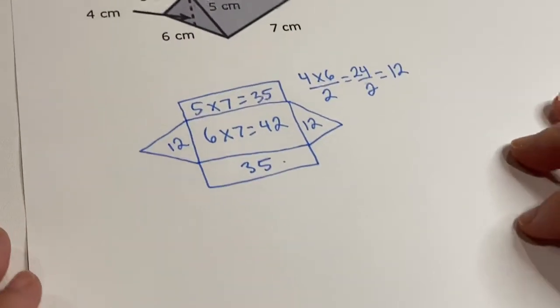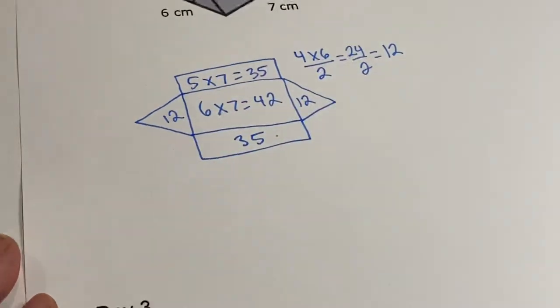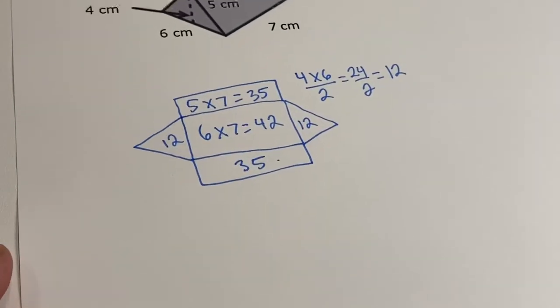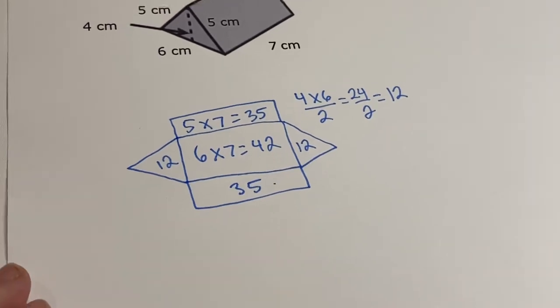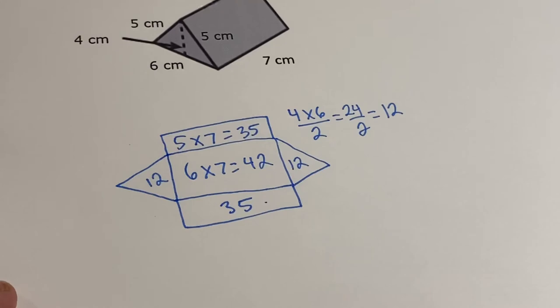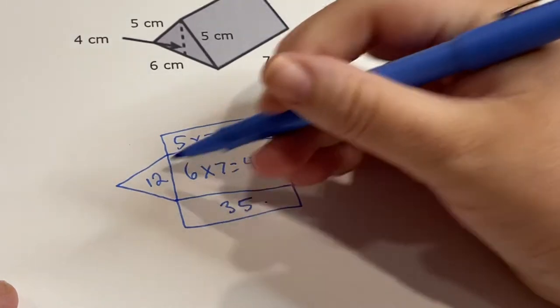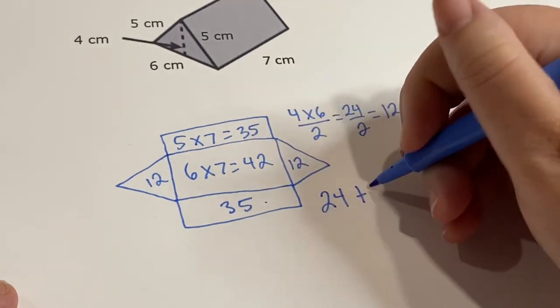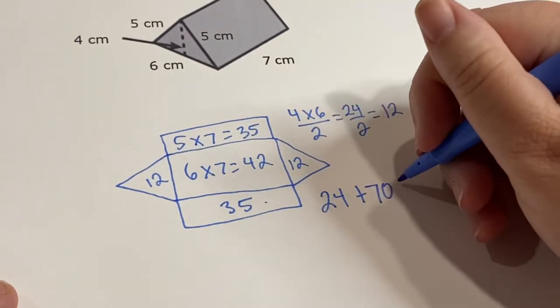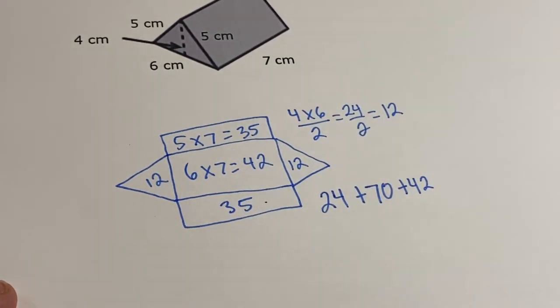So we have our five areas here, and then we just add them together. Now, you can just take out a calculator and add them together, if your teacher lets you do that. Personally, this is how I would do it to just cut down on steps when I'm writing it out. In my head, I know that 12 plus 12 is 24, and then 35 plus 35 is 70, and then plus 42. That's a little bit easier of a problem to do than having five numbers.